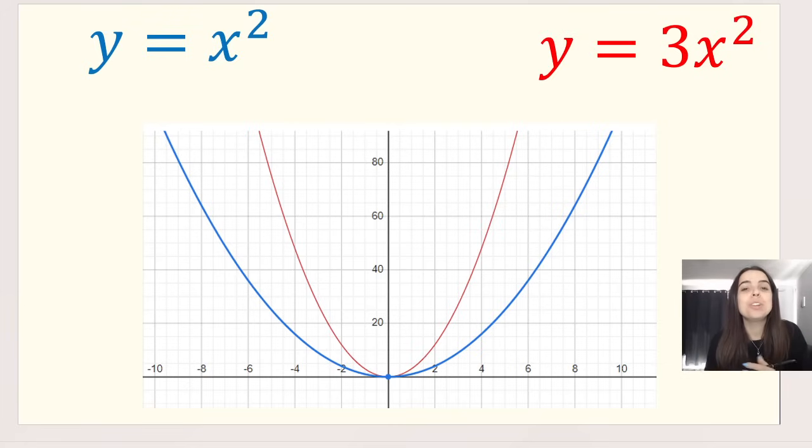Then we can also look at the size of a. Is it one x squared, or three x squared? And that value, ignore the negative, ignore the positive, I'm talking about the size of a. The bigger that value is, so here we've got one x squared, and here we've got three x squared, the bigger that value is, the closer the arms are to the y-axis.